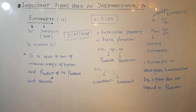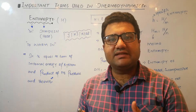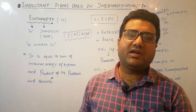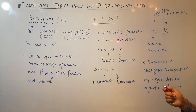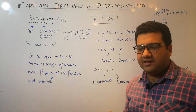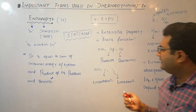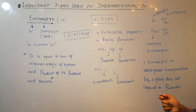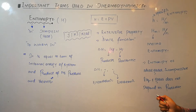Enthalpy is an extensive property, meaning it depends upon the quantity of matter in the system — greater the quantity of matter, more will be the enthalpy. It is also a state function, meaning it only depends on the state of the system and is independent of the thermodynamic process used to achieve that state. As a state function, its absolute value cannot be measured, but the change in enthalpy can. Delta H equals final enthalpy minus initial enthalpy — i.e., enthalpy of products minus enthalpy of reactants.